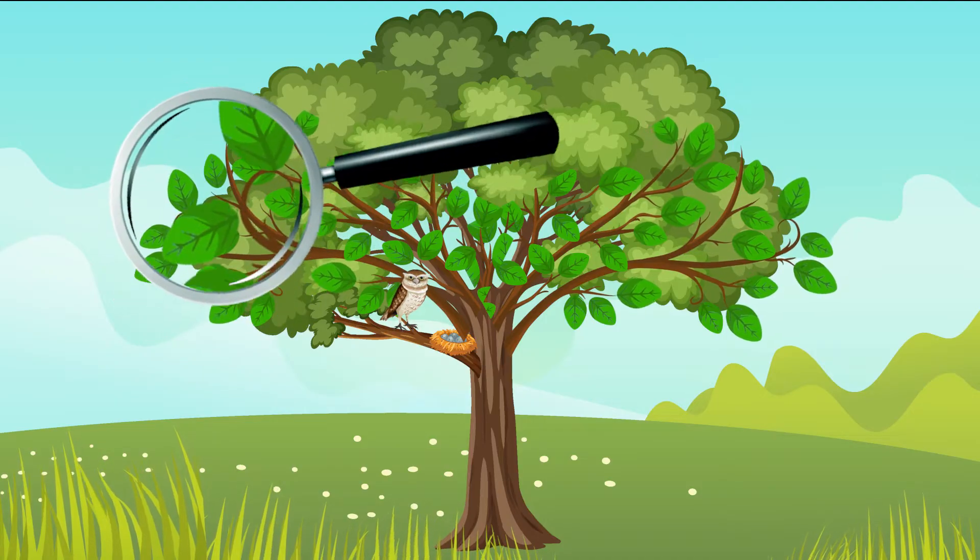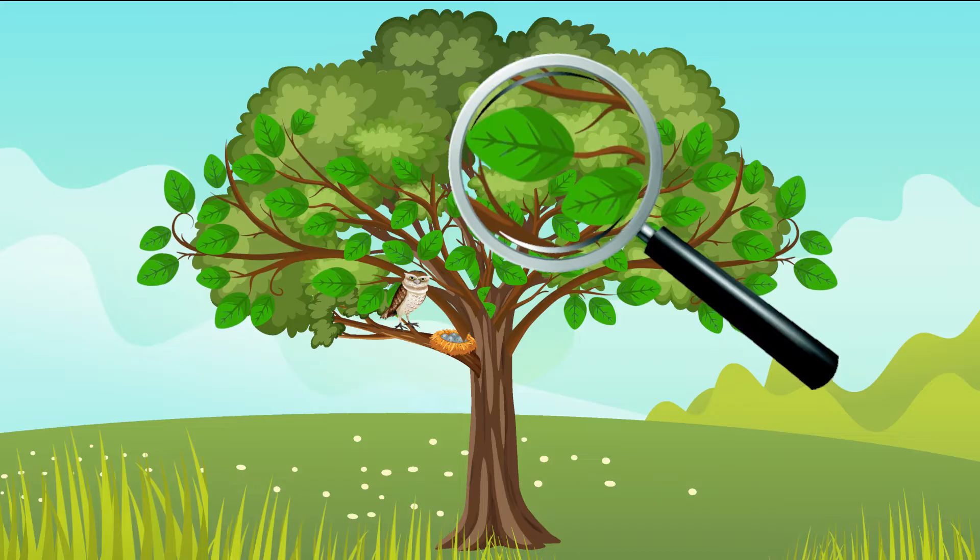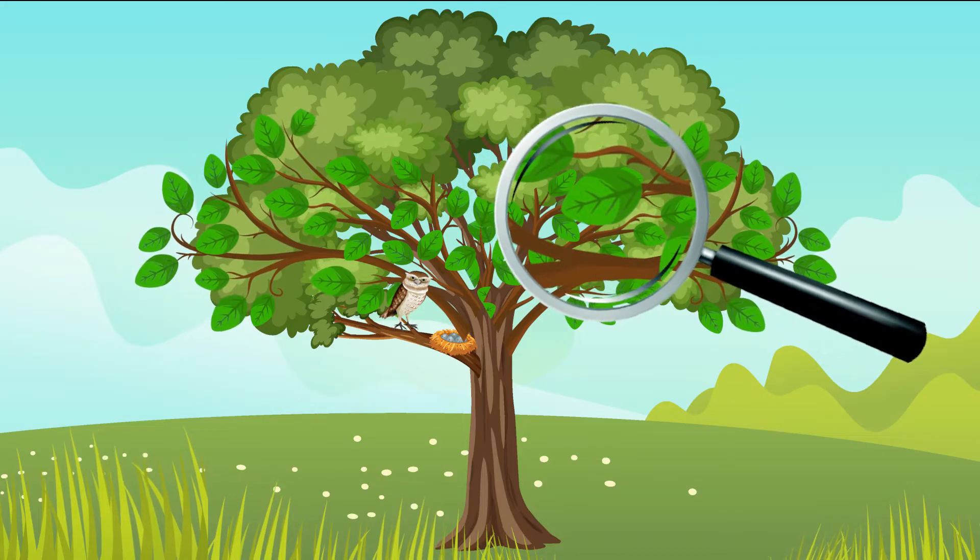Leaves. Leaves grow on the branches. They are a shelter and food for insects.